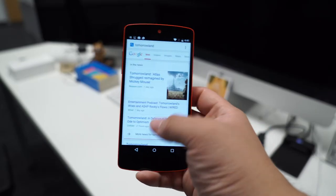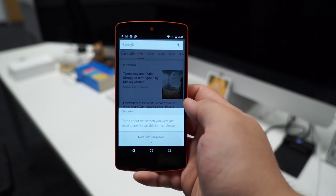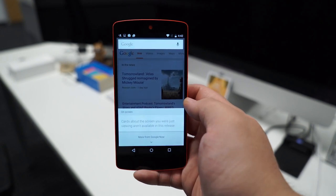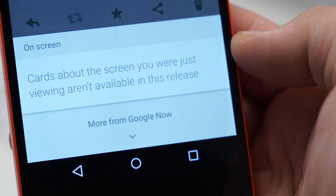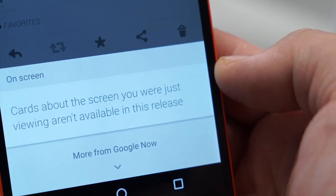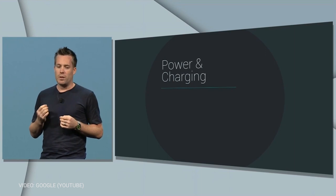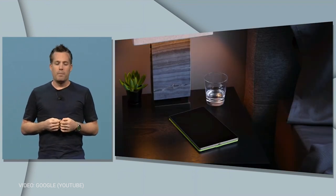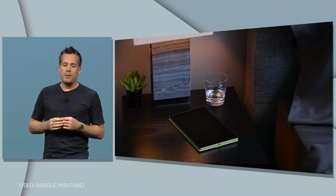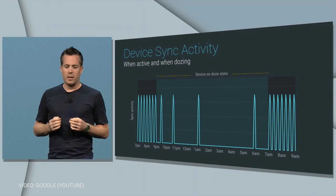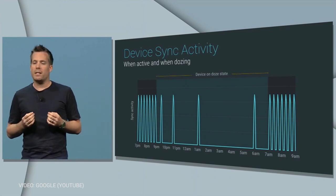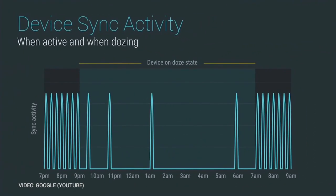Unfortunately, we weren't able to try Now on Tap as the first preview doesn't offer it, but once we have access to it, we'll be sure to keep you guys in the loop. Another big change in Android M is Doze, Android M's newest power saving feature. Using the device's built-in motion sensors, it'll know whether or not a device is in someone's hands and will go into a deeper power-down state to save battery in the long run. However, it's smart enough to not turn off entirely, since it'll still be able to activate alarms or wake up for incoming chat requests.